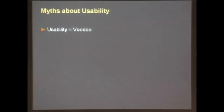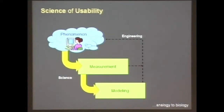First, I want to dispel some myths about usability. There's a myth out there that usability is voodoo science. That is, how do we know if something is usable? We look at it and say, "that's cool, it must be usable." We say it's user-friendly or intuitive — phrases like that have no real meaning, no teeth. I want to move away from that and convince you that usability actually has a science to it. Just like any other science, it's something we measure.